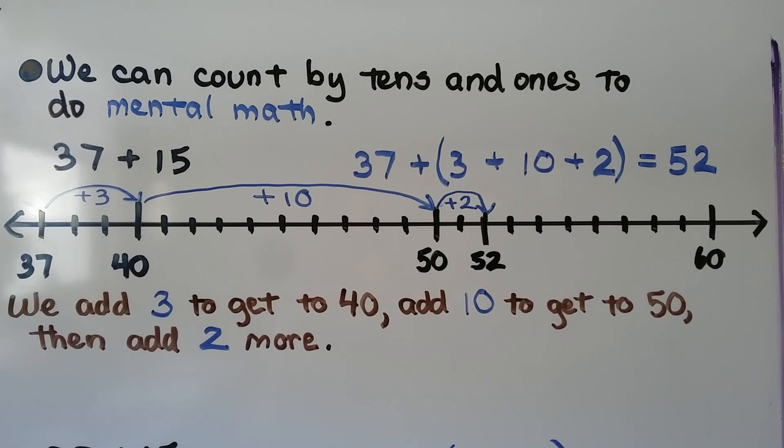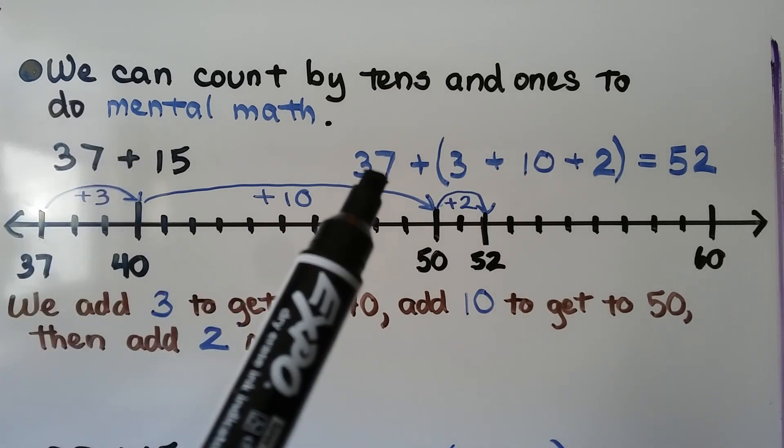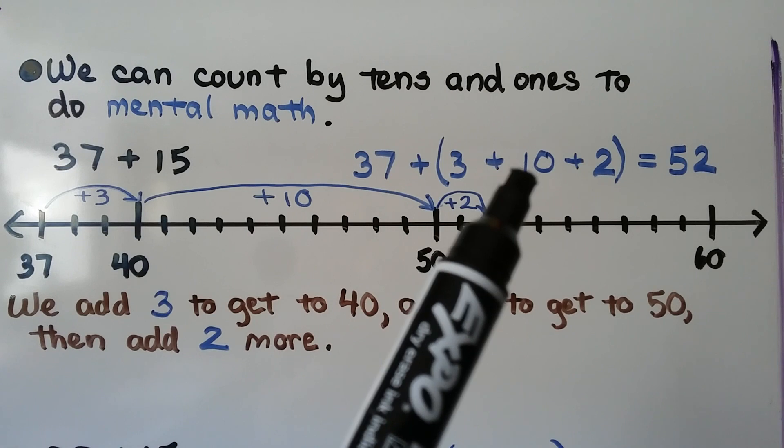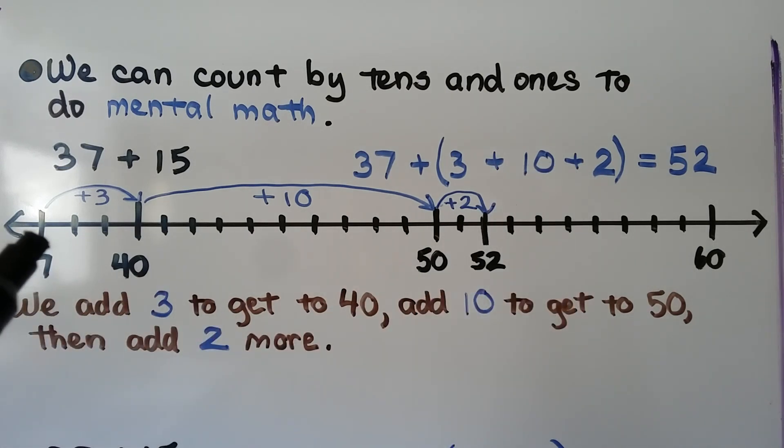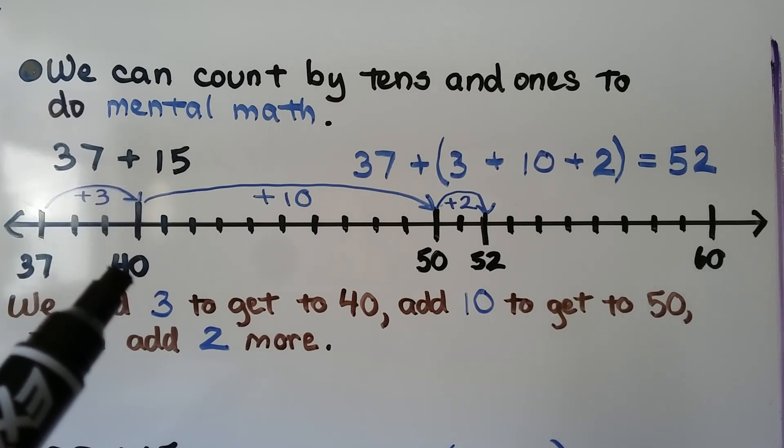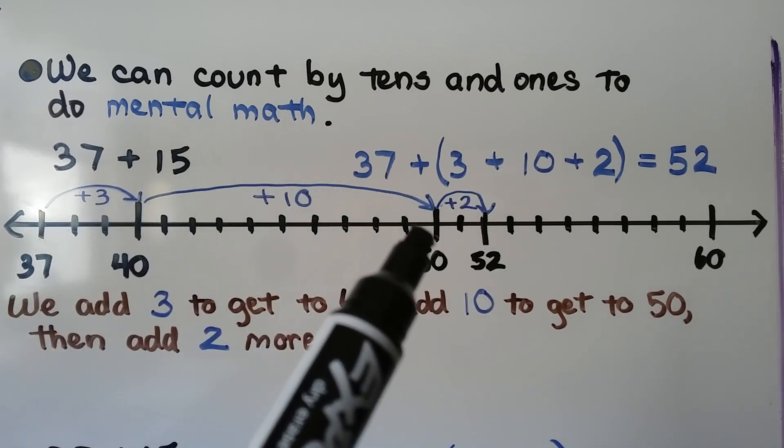We can count by tens and ones to do mental math. If we need to add 37 plus 15, we can break the 15 apart into a 3 plus a 10 plus a 2. We start at 37. We add 3 to get us to the next 10, which would be 40. We add 10 to that. Now we're at 50.